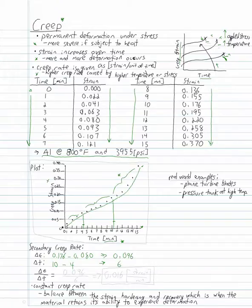We'll make that a fraction to find the rate. We take the change in strain, which is 0.096, and divide it by our change in time, which is 6. Plugging those numbers in, we get a value of 0.016. That's going to be strain per unit of time, which is minutes. Here we have our secondary creep rate and our plot.